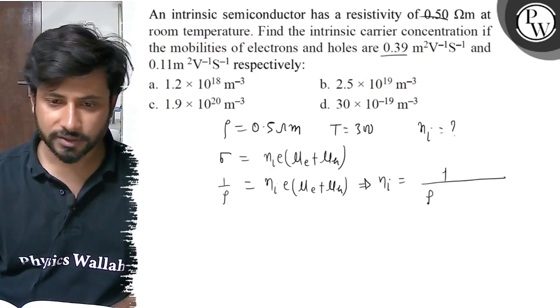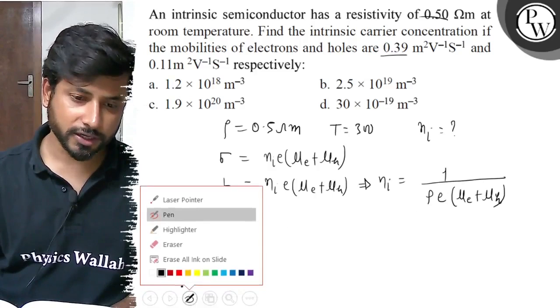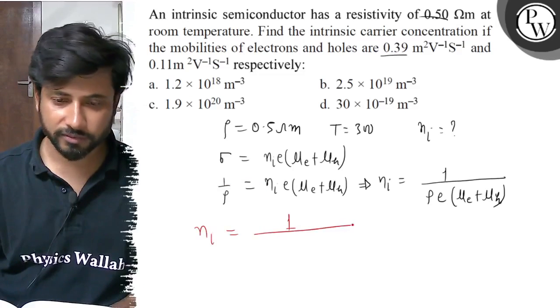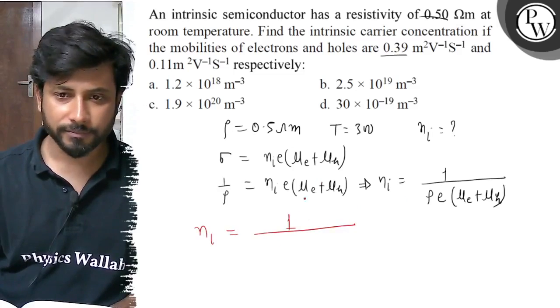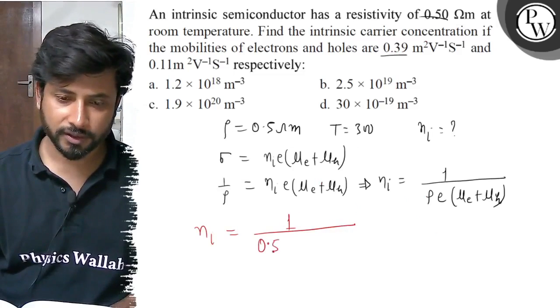Now we put values and answer. We have intrinsic carrier concentration ni = 1 divided by resistivity 0.5 times electronic charge 1.6×10⁻¹⁹ times (μe + μh).